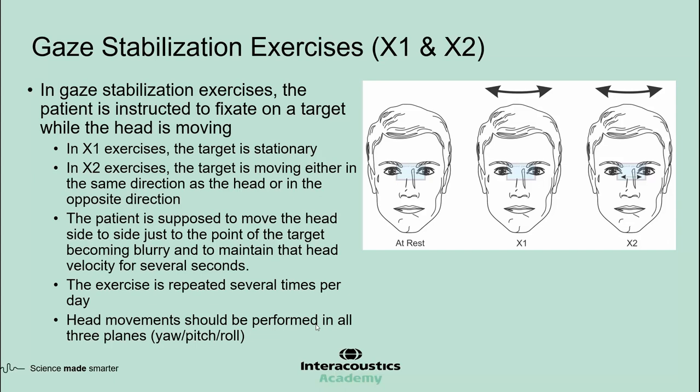In the X1 part of the exercise, the target or business card is stationary and can be held in hand or affixed to the wall. In the X2 exercises, the patient usually holds the card at arm's length and moves it either in the same direction as the head or in the opposite direction. The head movements are usually prescribed for both horizontal and vertical planes, and in rare occasions, movements in the roll plane are also included.